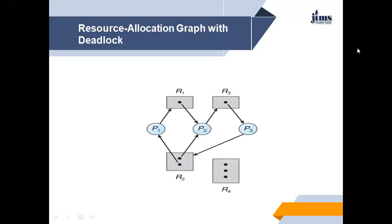Since two cycles exist, this resource allocation graph represents a deadlock. Processes P1, P2, and P3 are deadlocked. Process P2 is waiting for resource R3, which is held by process P3. Process P3 is waiting for either process P1 or P2 to release resource R2. In addition, process P1 is waiting for process P2 to release resource R1.